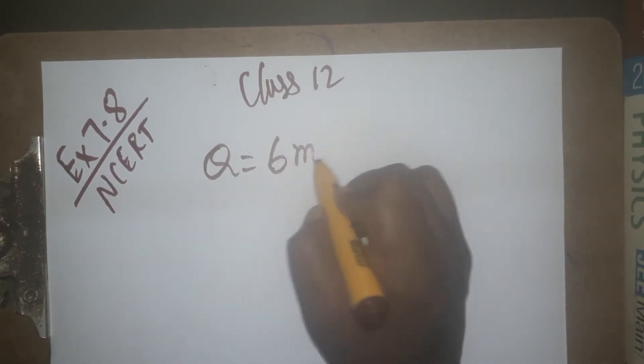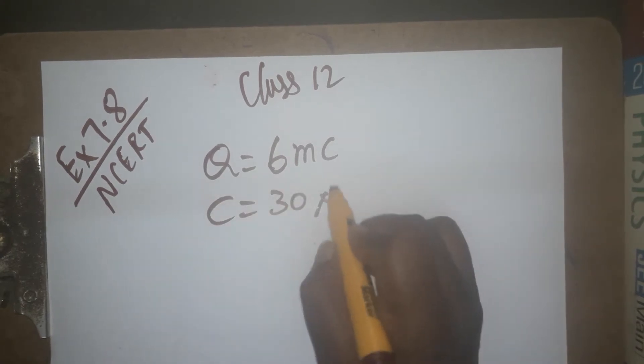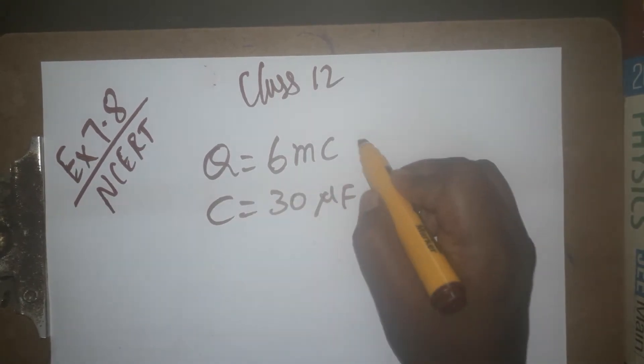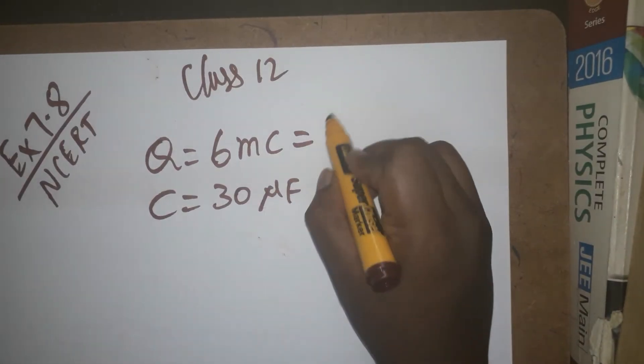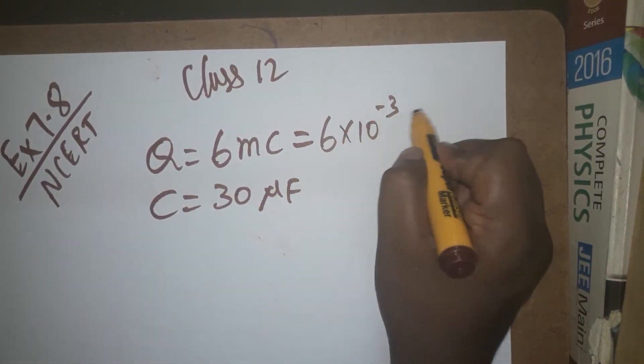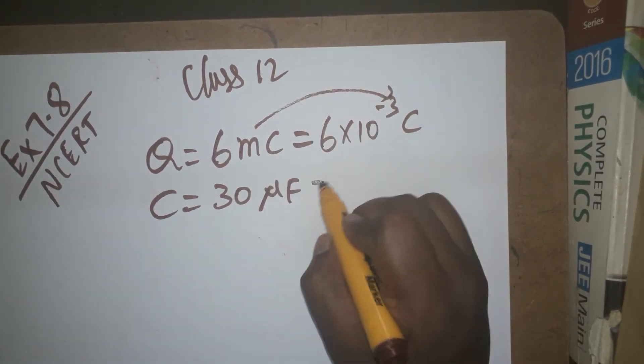The charge given is 6 millicoulombs and the capacitance is 30 microfarads. 6 millicoulombs equals 6×10^-3 coulombs, because milli to coulombs conversion uses 10^-3. 30 microfarads equals 30×10^-6 farads.